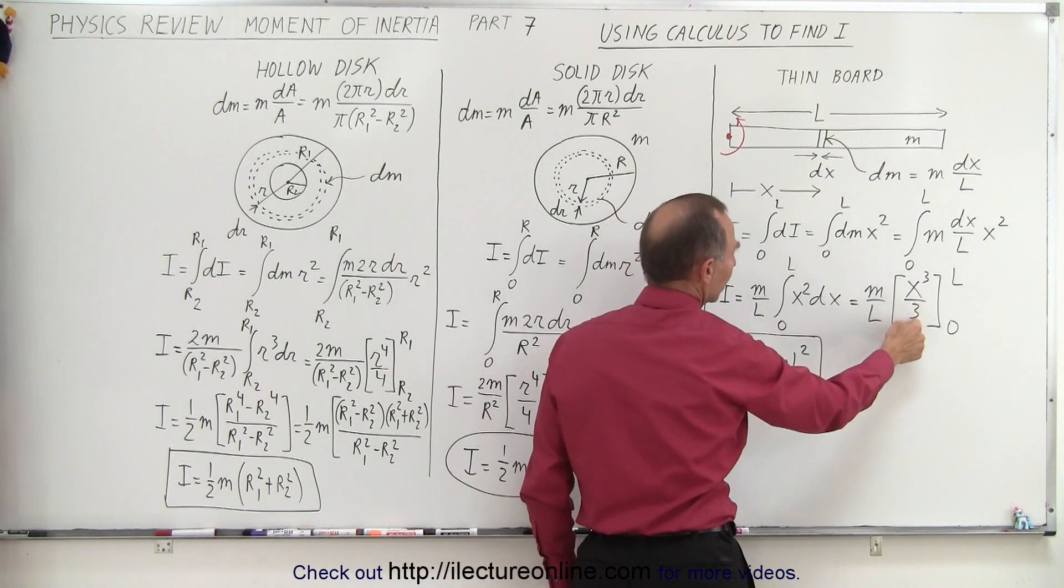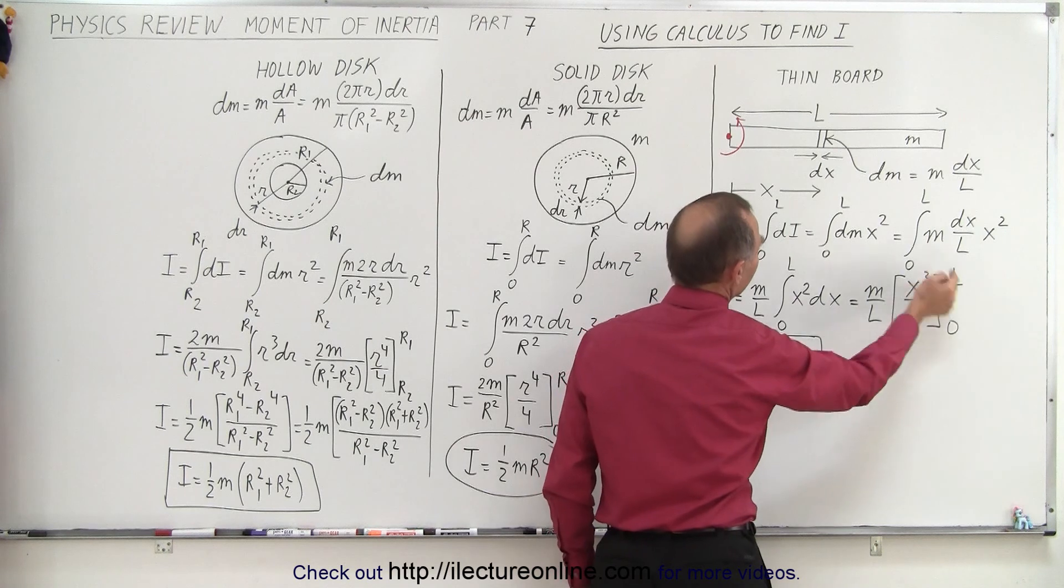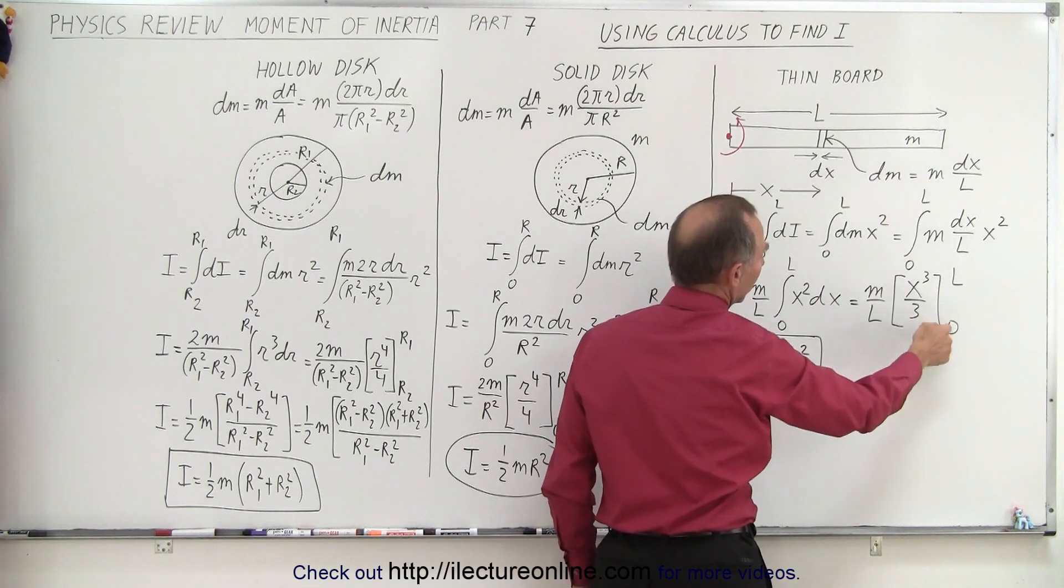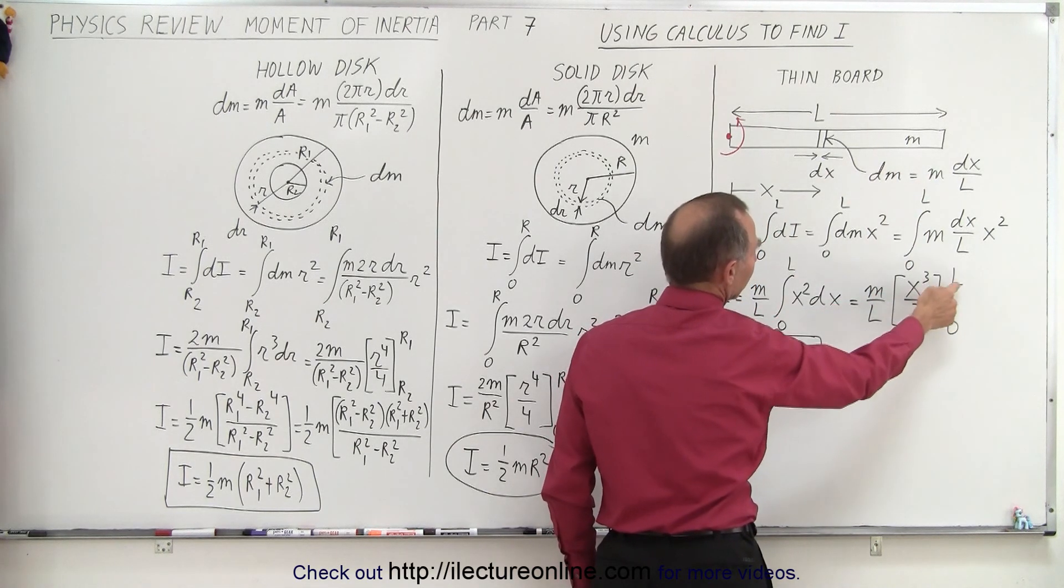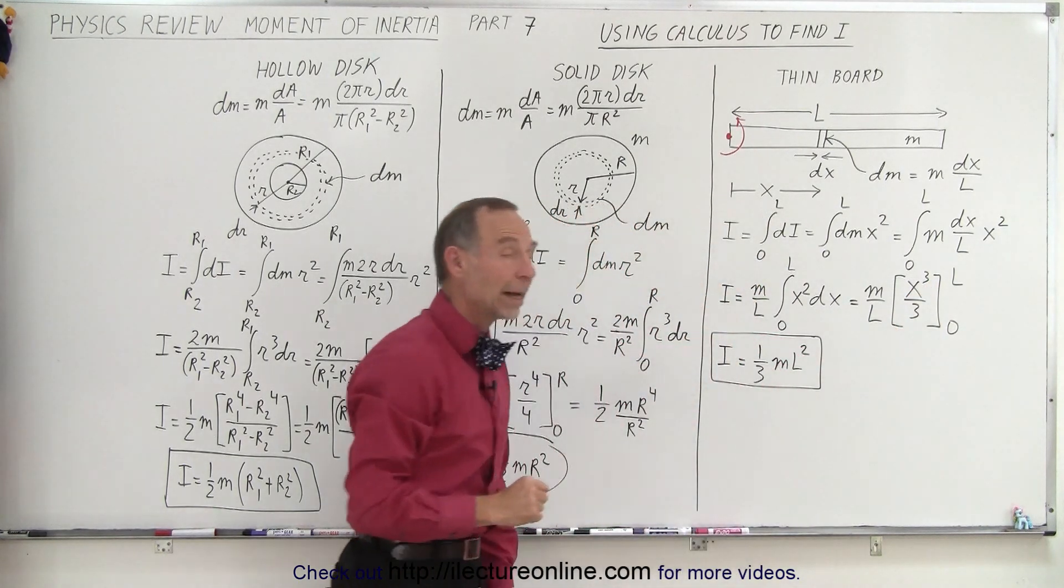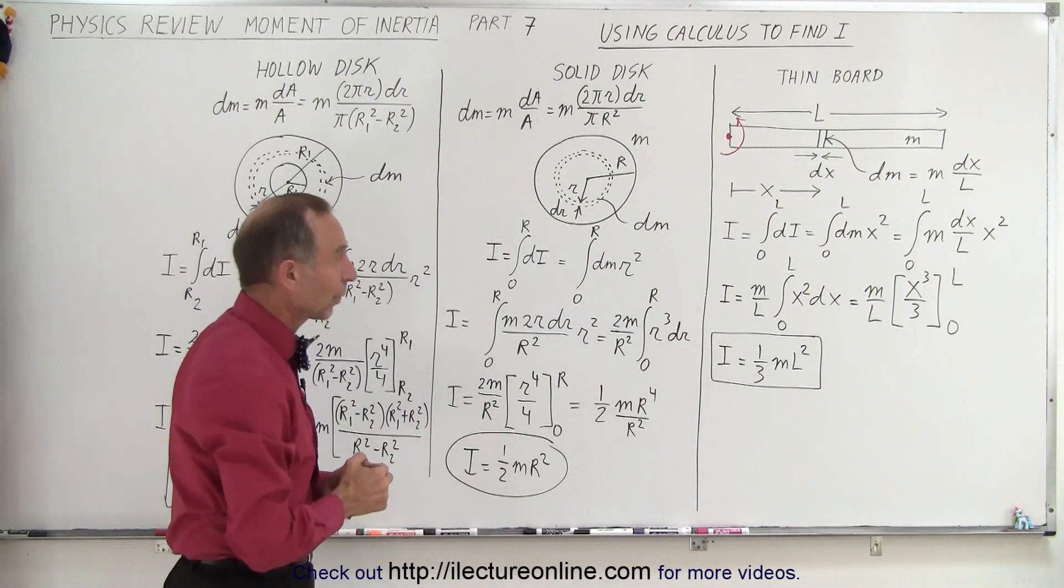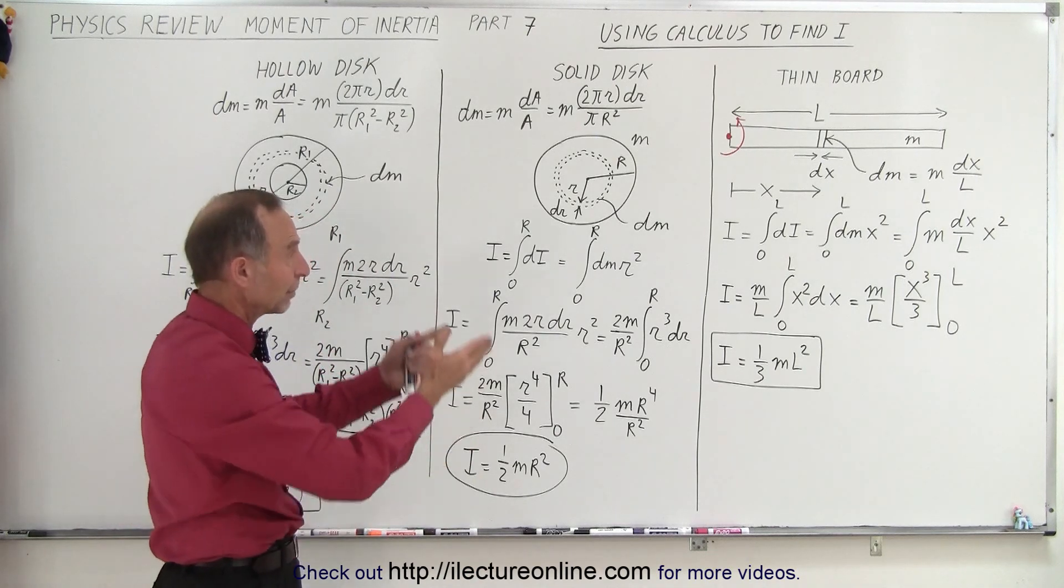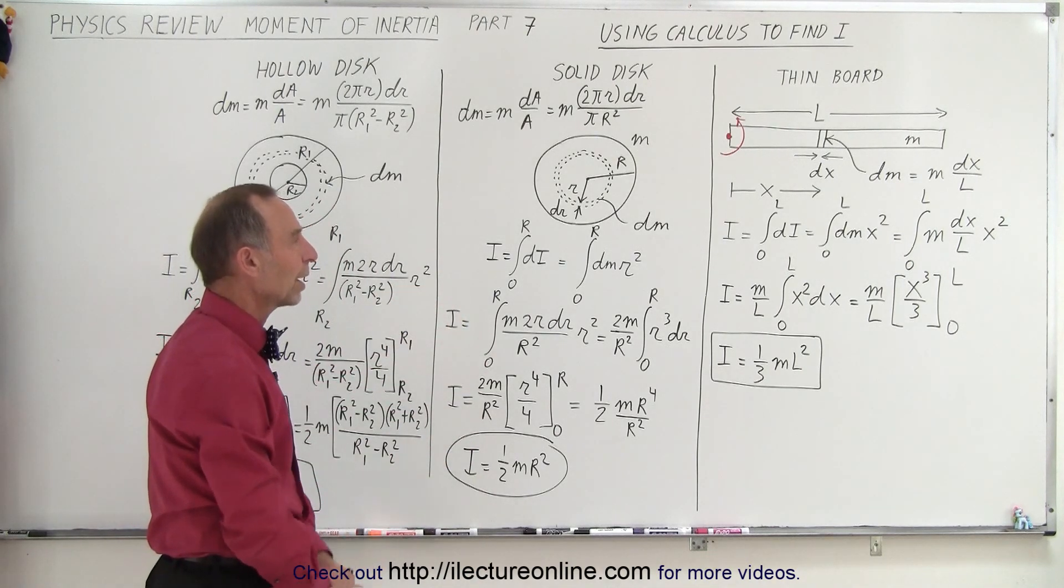When we integrate x cubed over 3, evaluate from 0 to l over the full length of the board. When we integrate, when we plug in 0, we get nothing. Plug in l, we get l cubed over 3 divided by l, we end up with i equals 1 third ml squared. The exact answer, of course, we were already expecting, but now you see how that was derived.